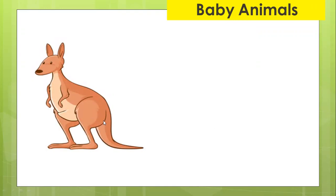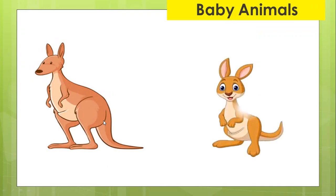For example, this is a mother kangaroo. We call it kangaroo, right? How about the baby kangaroo? How do we name a baby kangaroo? Do we just call baby kangaroo? No, a baby kangaroo is called a joey. Can you say joey? Good. So joey is a baby kangaroo. Good.